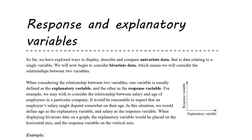For example, if we were going to look at the relationship between salary and age of employees in a particular company, it would be reasonable to expect that an employee's salary might depend to some extent on their age. So in this situation we would define age as the explanatory variable — it's age that explains a person's salary — and salary is the response variable, as their salary level is in response to how old they are and therefore how much experience they have.